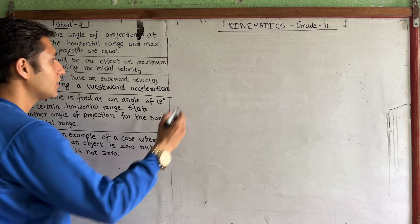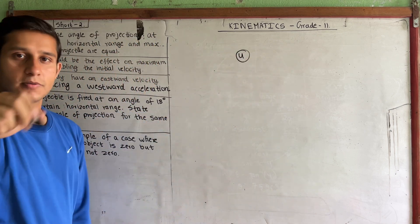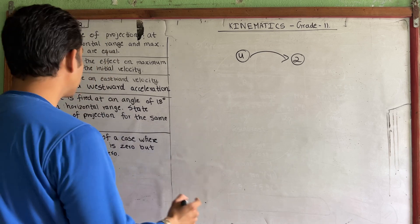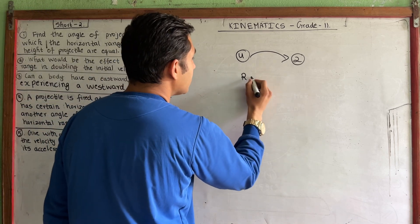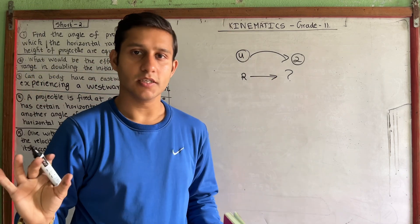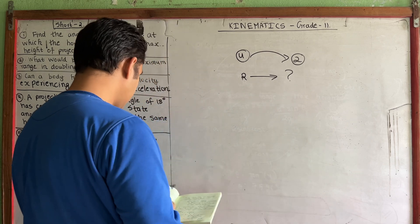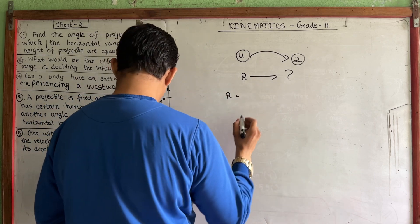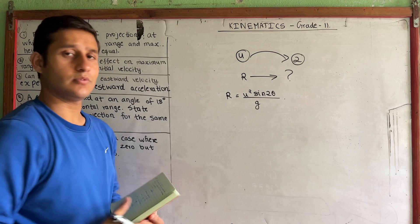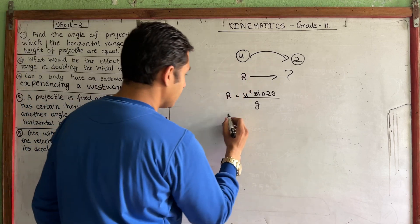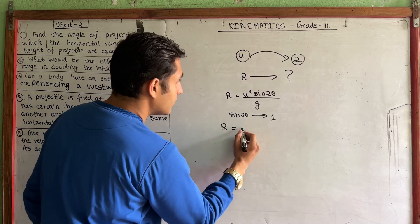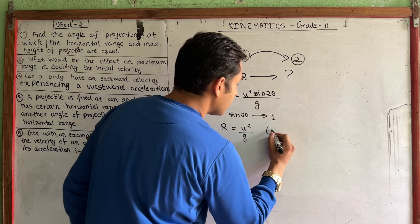What would be the effect on maximum range in doubling the initial velocity? The formula for horizontal range is R = u² sin2θ / g. For maximum range, sin2θ = 1 (its maximum value), so the maximum range R_max = u² / g.